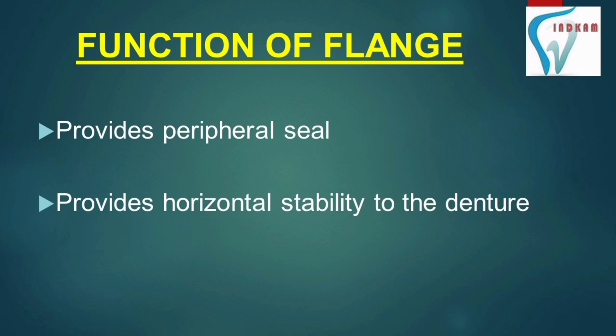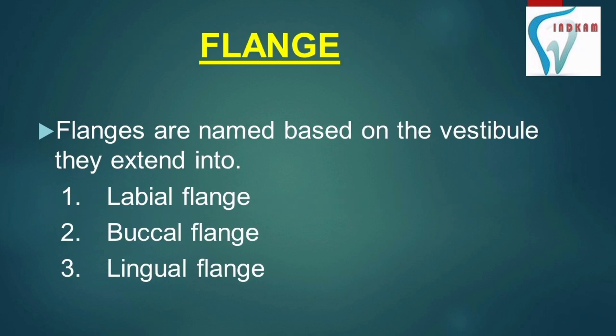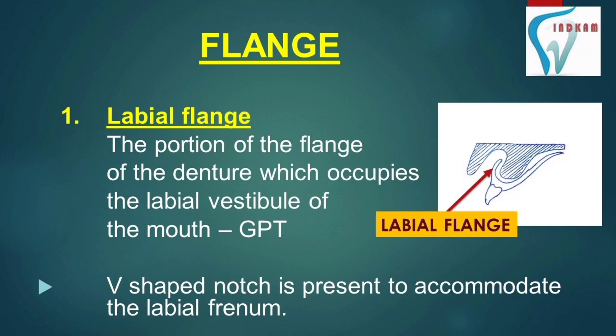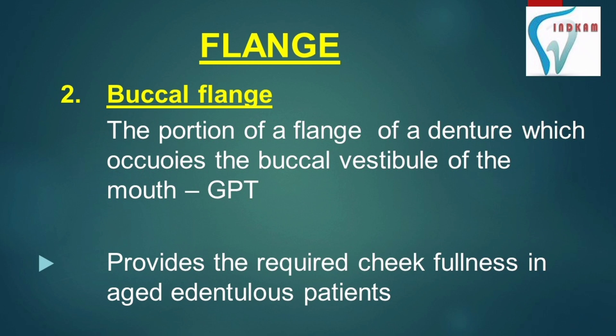A flange provides peripheral seal and also provides horizontal stability to the denture. Flanges are named based on the vestibule they extend to, such as labial flange, buccal flange, and lingual flange. The labial flange is that portion of the flange of the denture which occupies the labial vestibule of the mouth, as seen in the diagram. A V-shaped notch is present to accommodate the labial frenum in the flange.